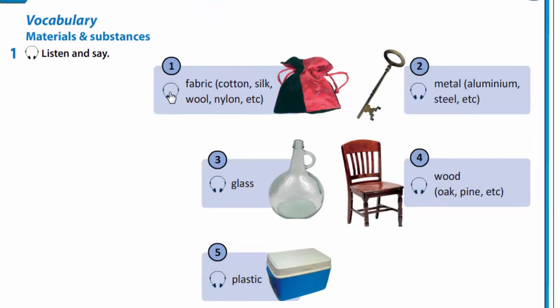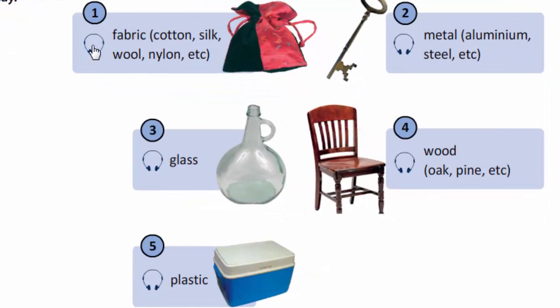Listen and see. Fabric – cotton, silk, wool, nylon, etc. Metal – aluminium, steel, etc. Glass. Wood – oak, pine, etc. Plastic.